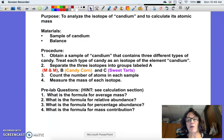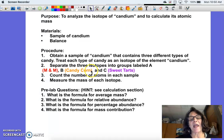In the modeling that we're going to be doing, we'll be using three different types of candy. As you can see here, one of our isotopes of the element candium will be an M&M. The second isotope of our element candium will be candy corn, and the third isotope of our element candium will be sweethearts.